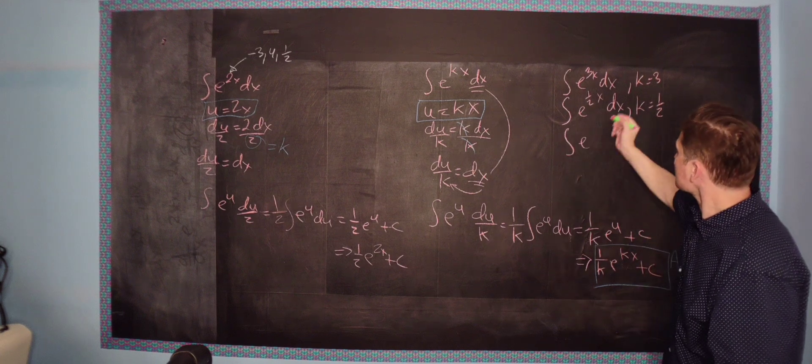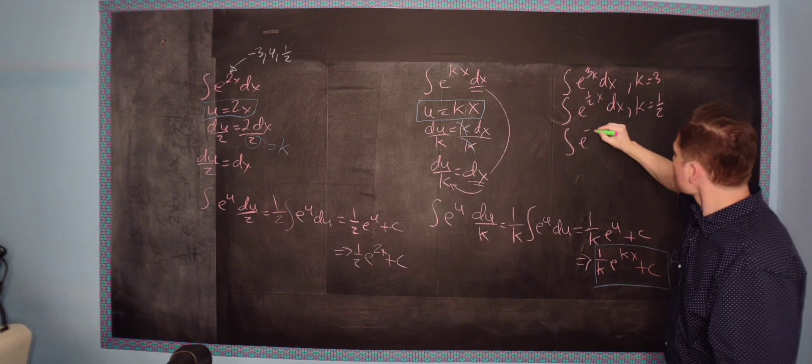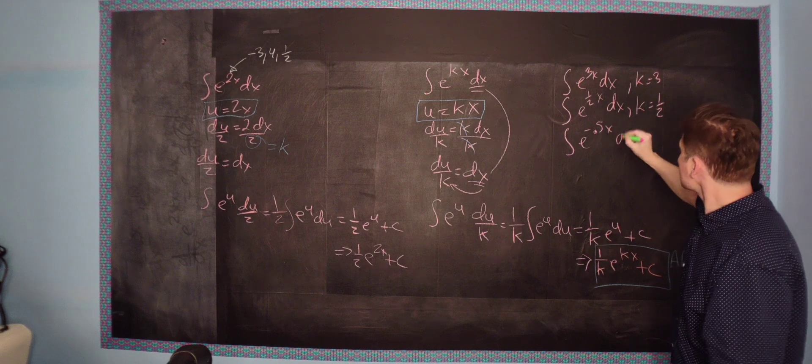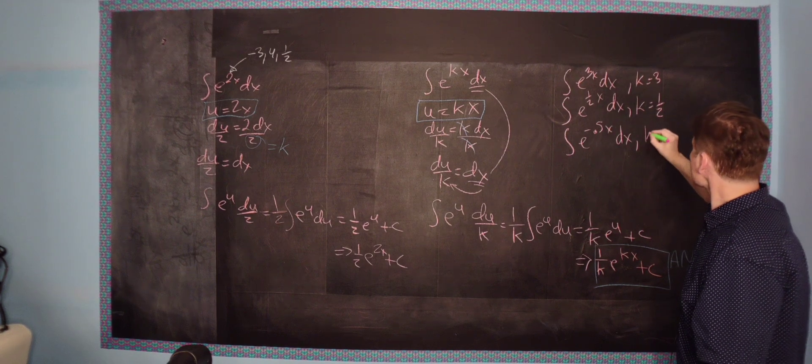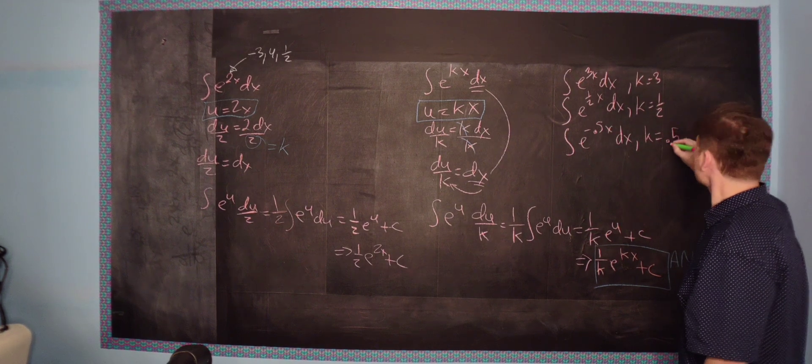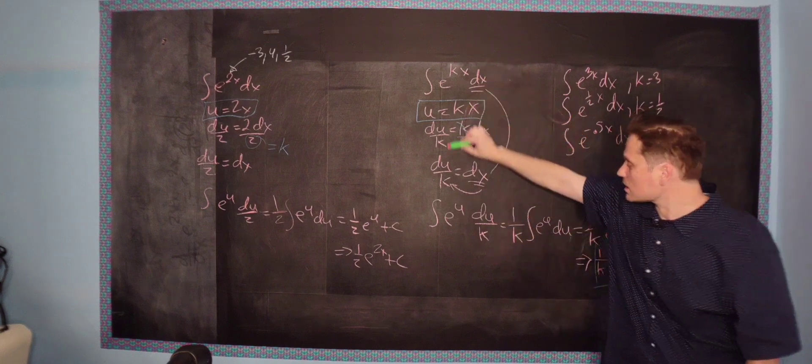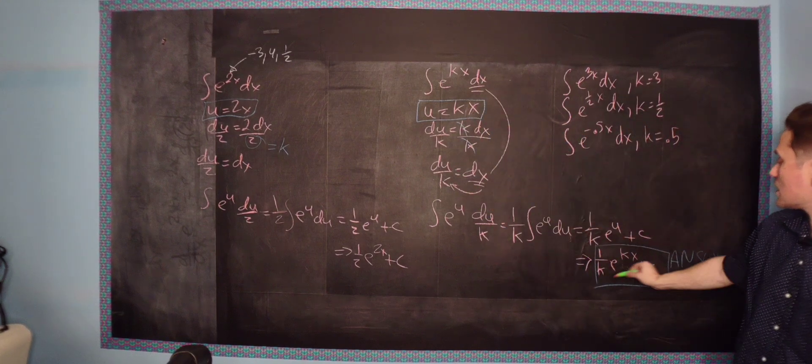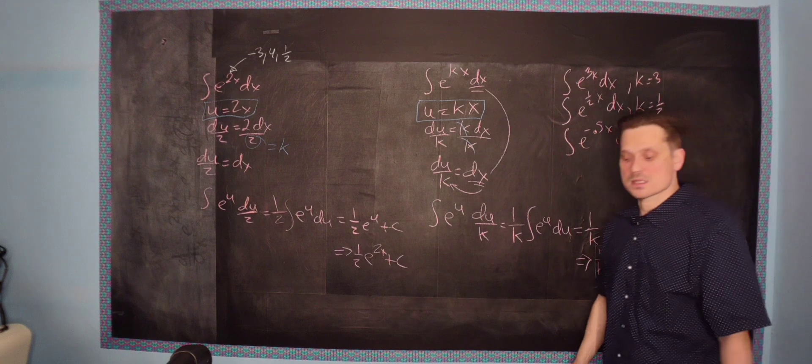If you had this right here, where he says e to the negative 0.5 x dx, it just happens that k is equal to negative 0.5. But the logic is exactly the same sequence of steps.